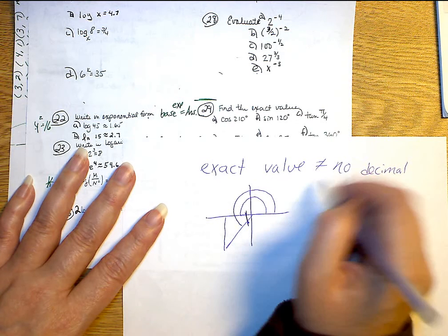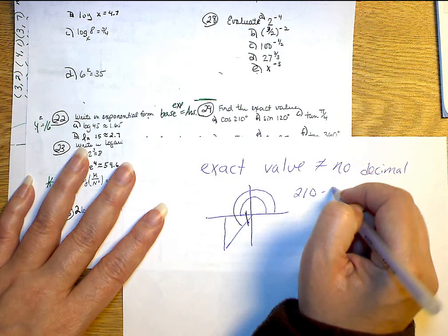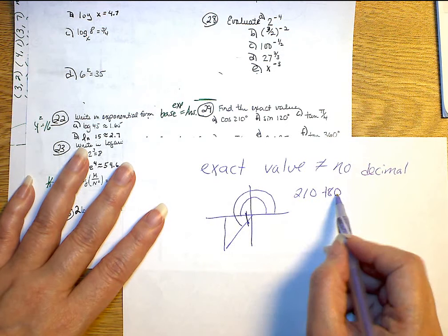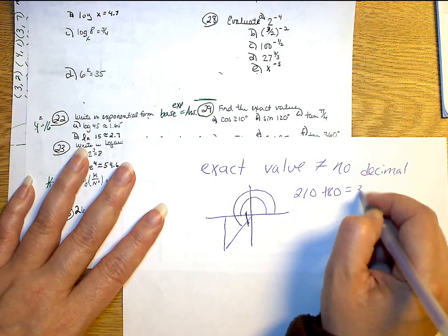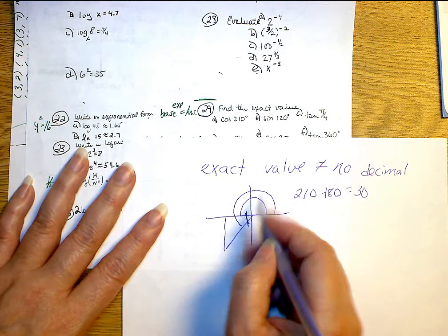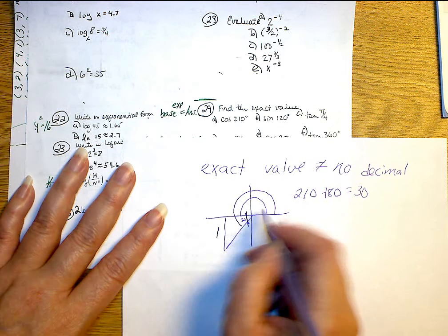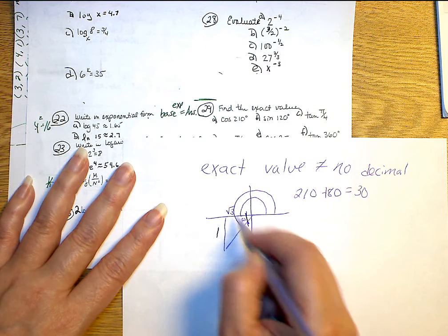So I'm going to go 210 minus 180. If I go 210 minus 180, that gives me a 30 degree. If this is a 30, that means across from the 30 is a 1, and then adjacent is the square root of 3 with a hypotenuse of 2.